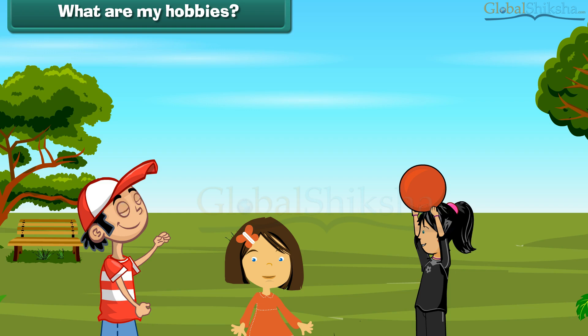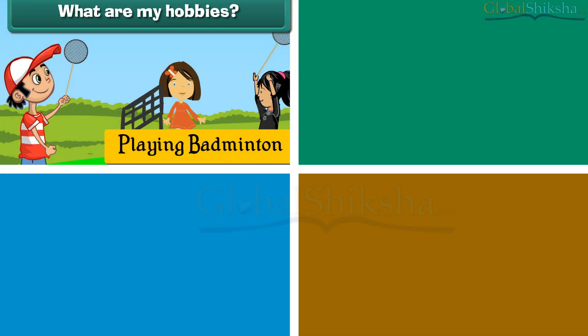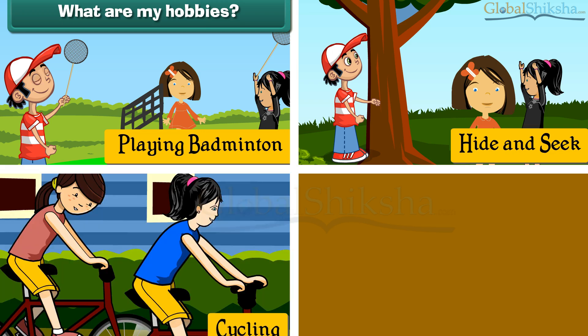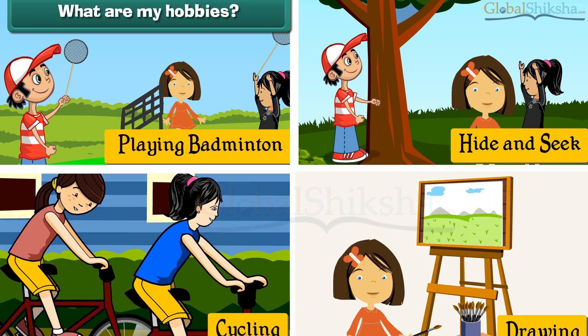I go out in the evening to play with my friends Rahul and Priya. They are my best friends. I play badminton with them. We also play hide and seek. After playing, we go cycling. When I return home, I will draw and colour.